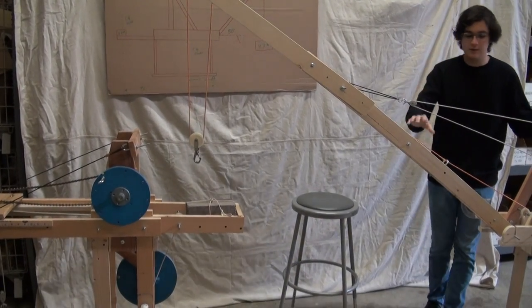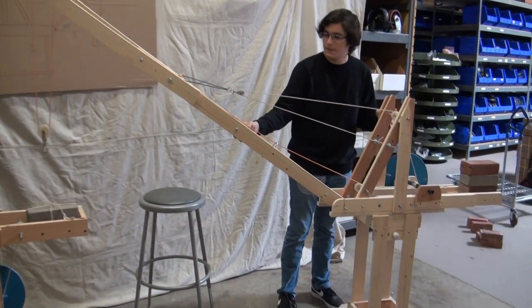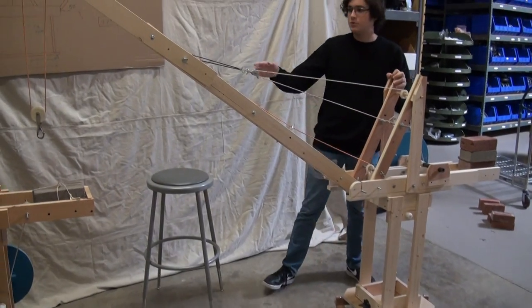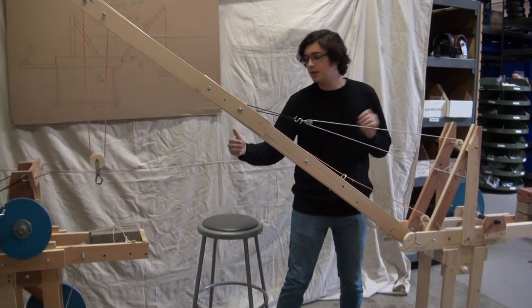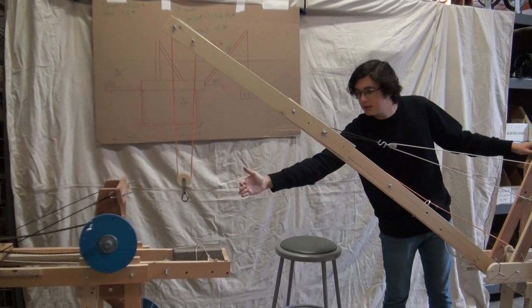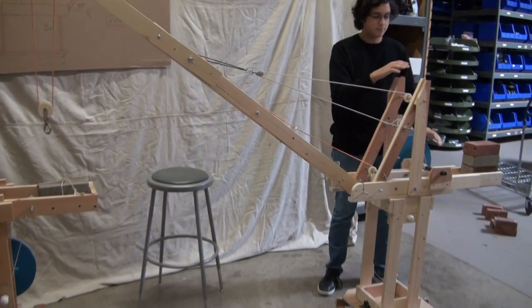As you can see, the crane is able to rotate around. It's able to lift up a load and it's able to lower the jib to get the load farther away, or raise the jib to get the load closer to the body of the crane. Okay.